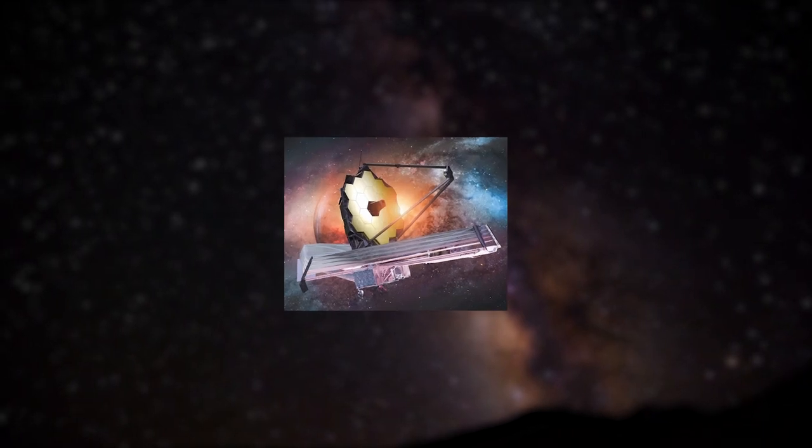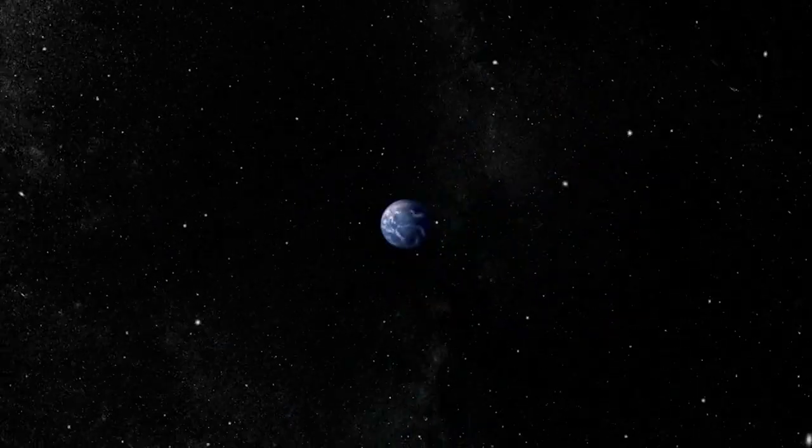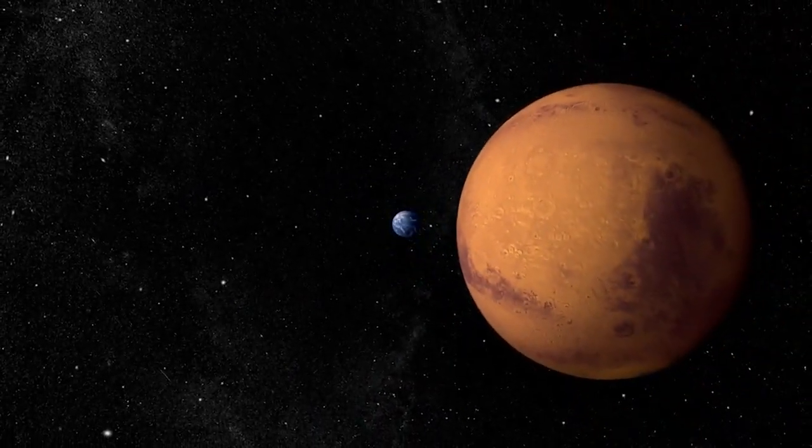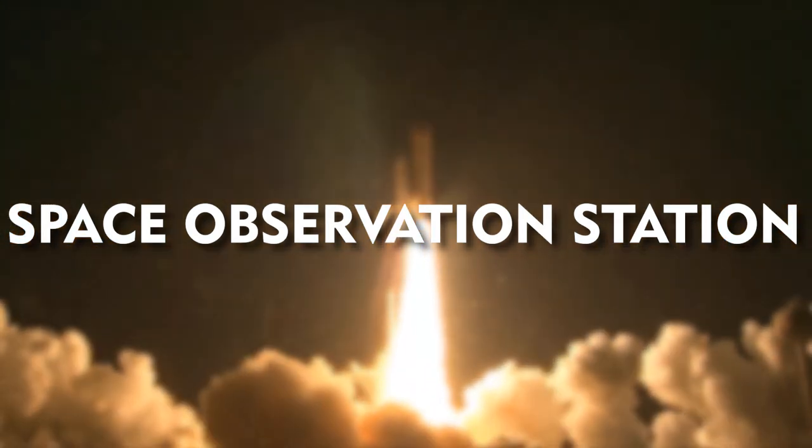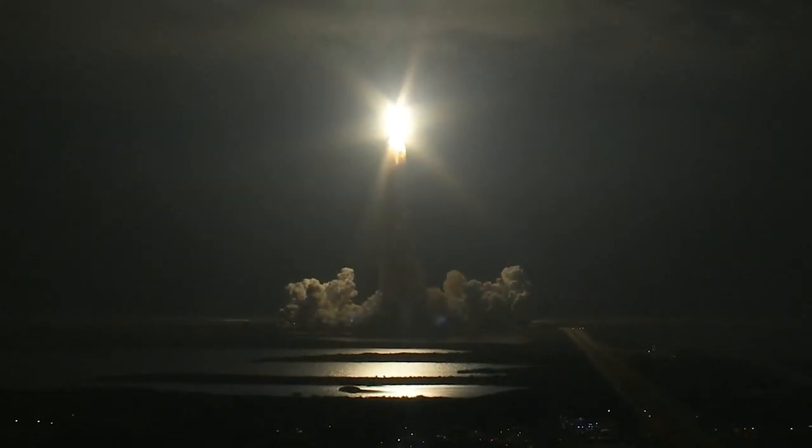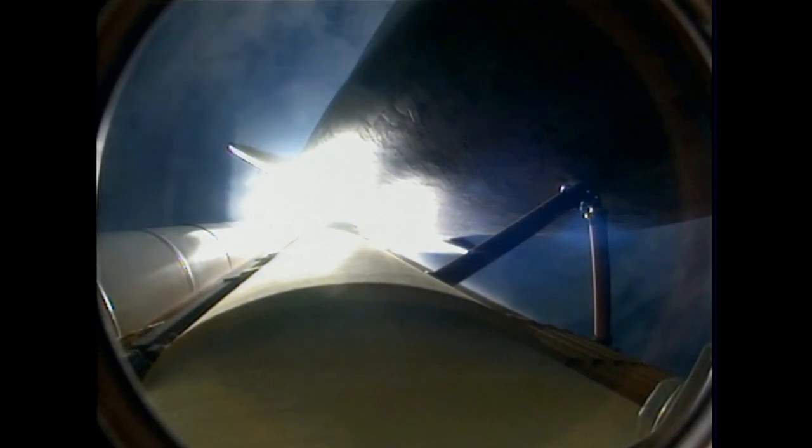NASA Insider just leaked James Webb Telescope's terrifying discovery in space. When you want to observe somewhere so far into space that you will never be able to reach it, you send a space observation station. NASA has done just that by launching the James Webb Space Telescope, also called JWST, into deep space, allowing us to see more of our universe.